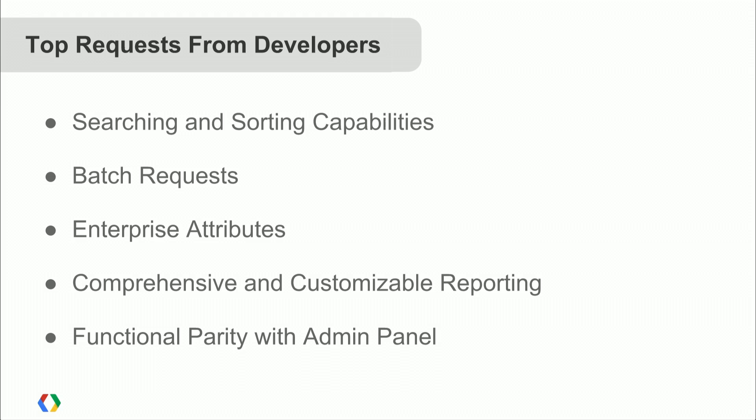We've taken a lot of requests from developers over the years. Top requests include: the ability to search and sort result sets more easily, batch requests — for instance, creating a bunch of users at once — enterprise attributes, more customizable reporting, and most importantly, functional parity with the admin panel for Google Apps for Business.